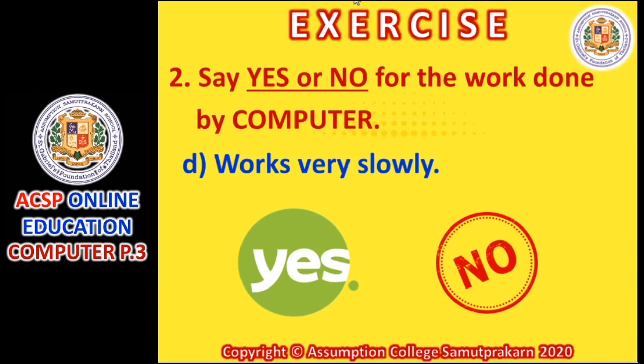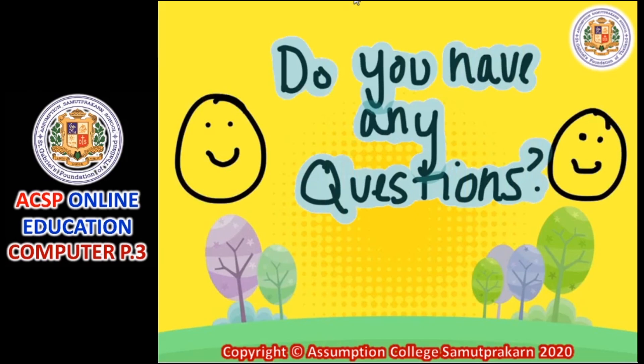I think all of you or the majority of you can answer the exercise. There are eight items — two questions, from A to D, eight items. I think it is very easy for you. We will start from the easy ones and move to the harder ones later. Do you have any question? Please pay attention to the lesson carefully and do not miss anything.